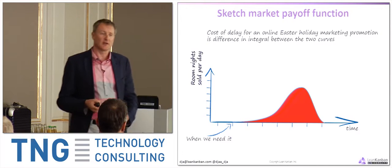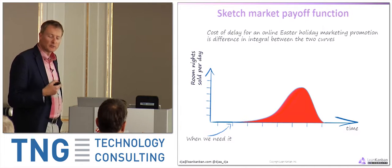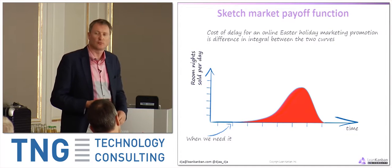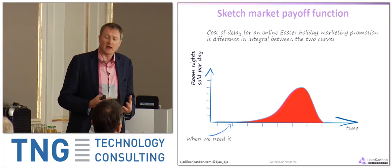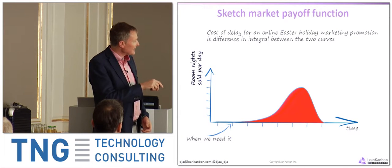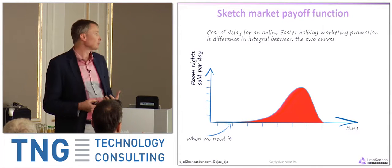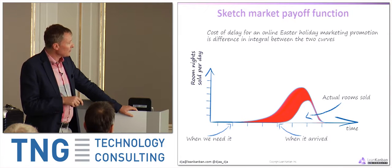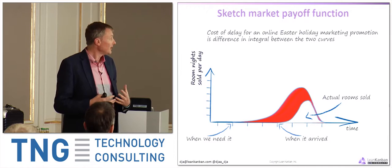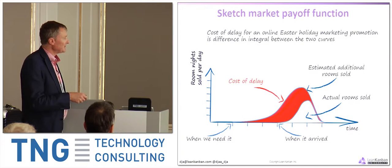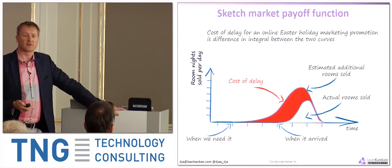When would you launch your Easter marketing campaign? Approximately the middle of January. There's a small blip at the beginning — a few percentage points of people who are so excited they buy immediately — then a tail, with bookings taken closer to the time. Now imagine we didn't get the promotion ready on time and there was some delay in releasing it. When we do release it, we sell fewer hotel rooms — the rate per day differs, and the total rooms sold is the integral of the curve. The difference between the two integrals is referred to as the cost of delay.